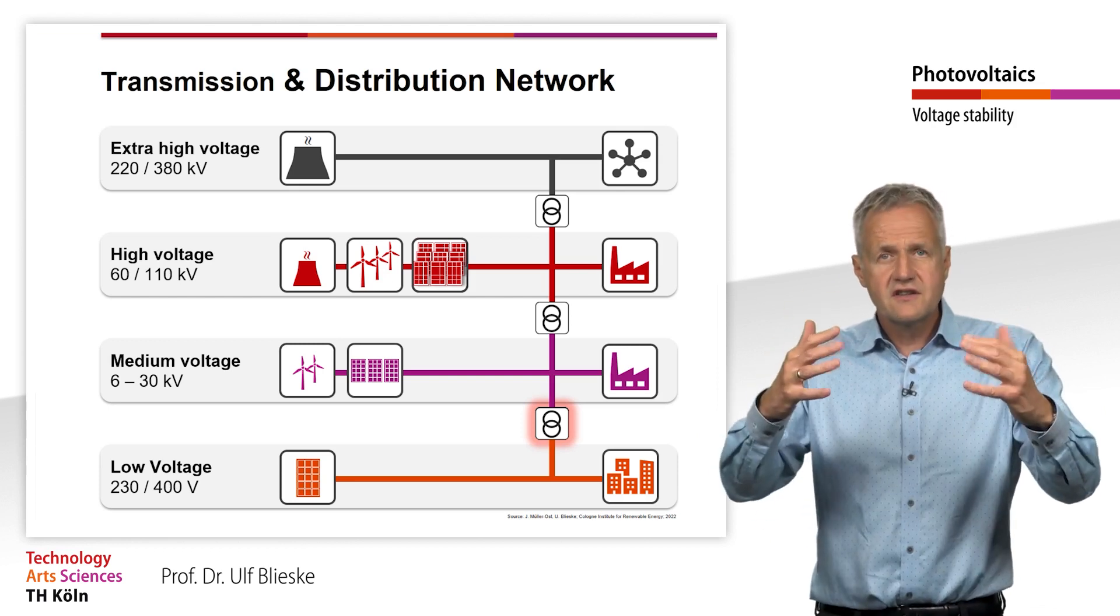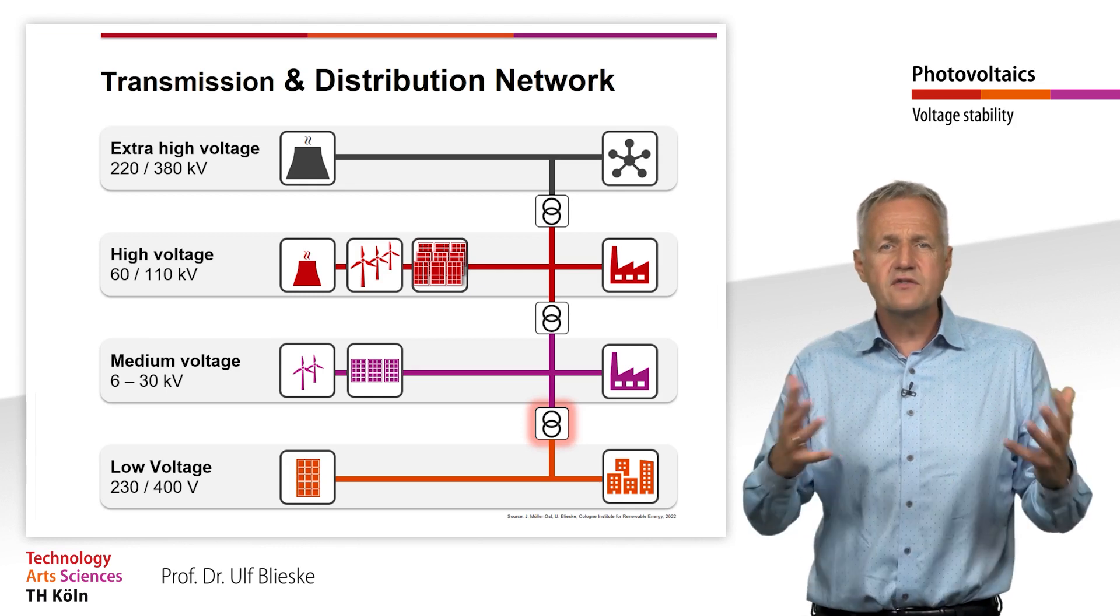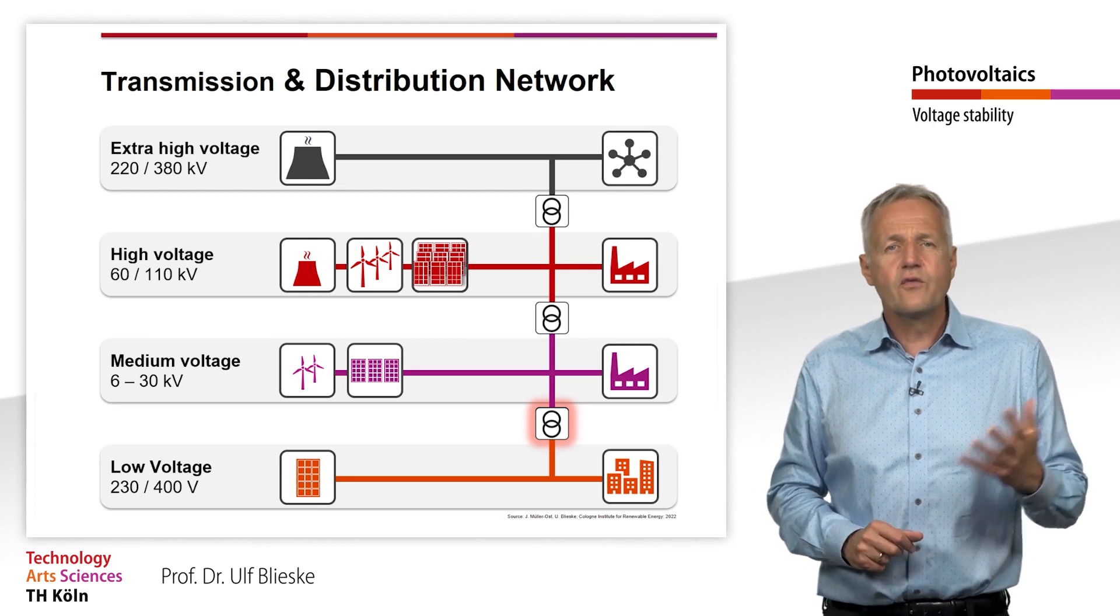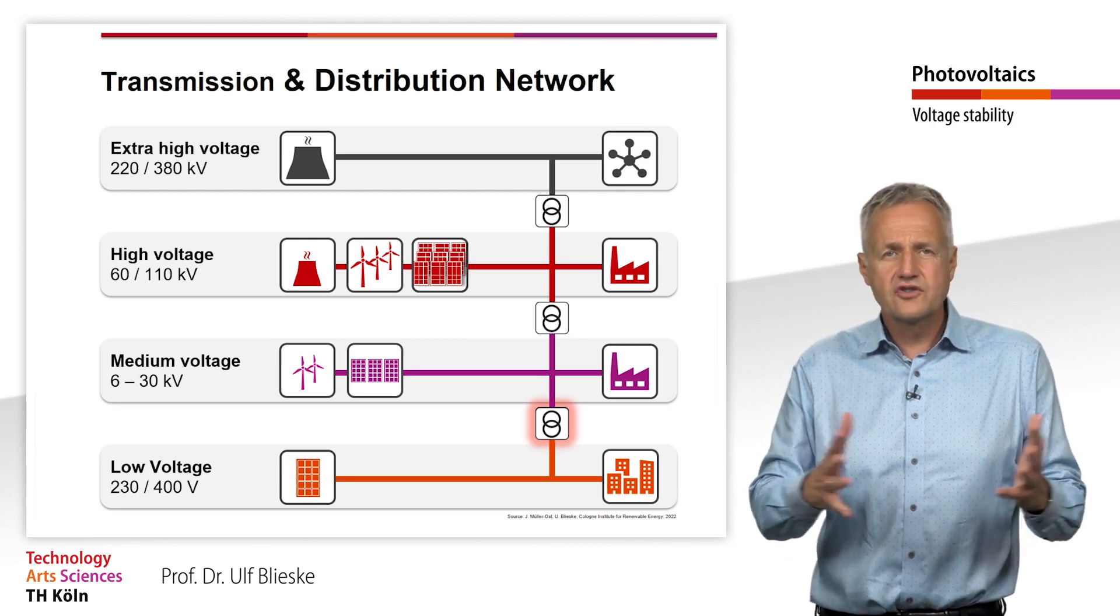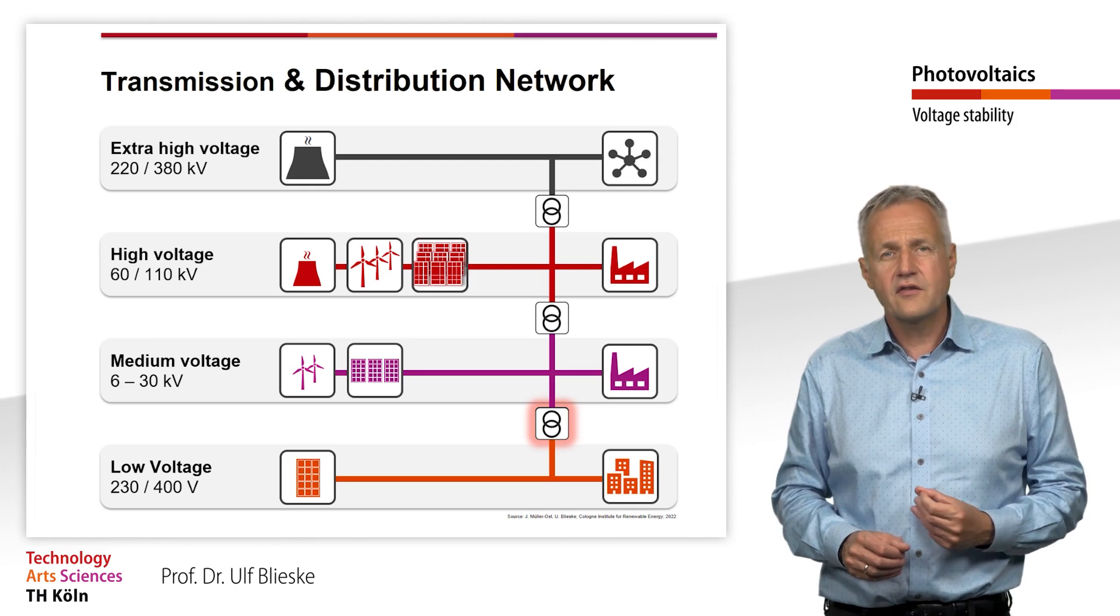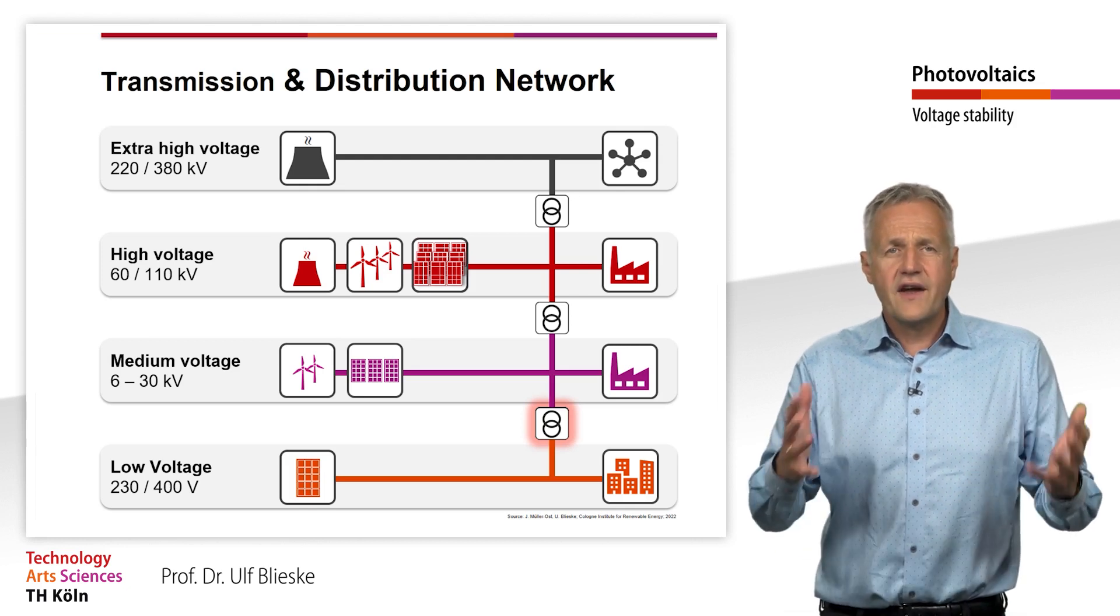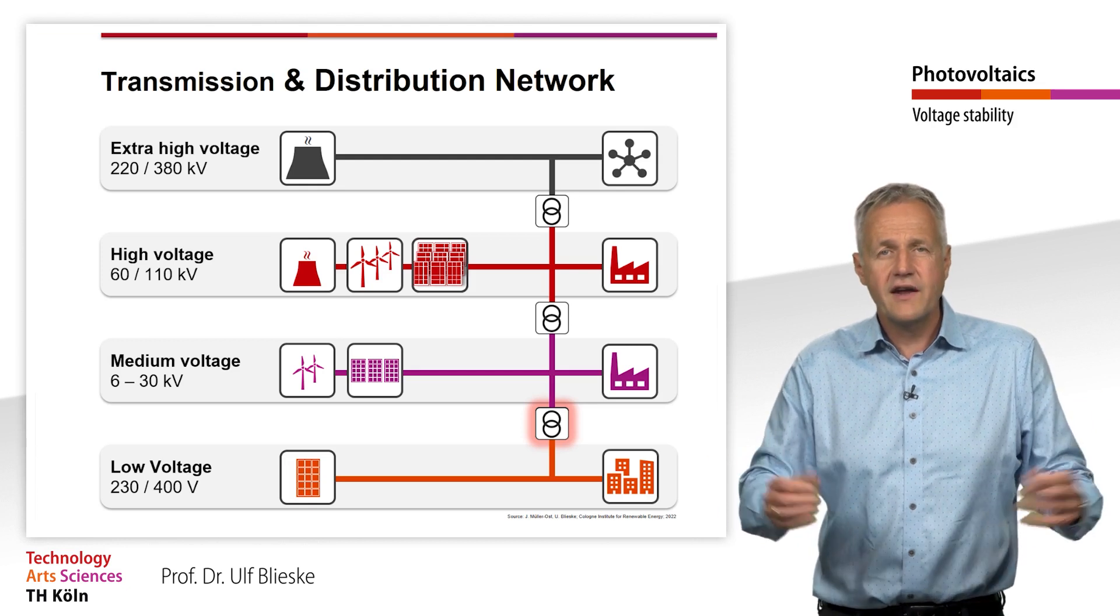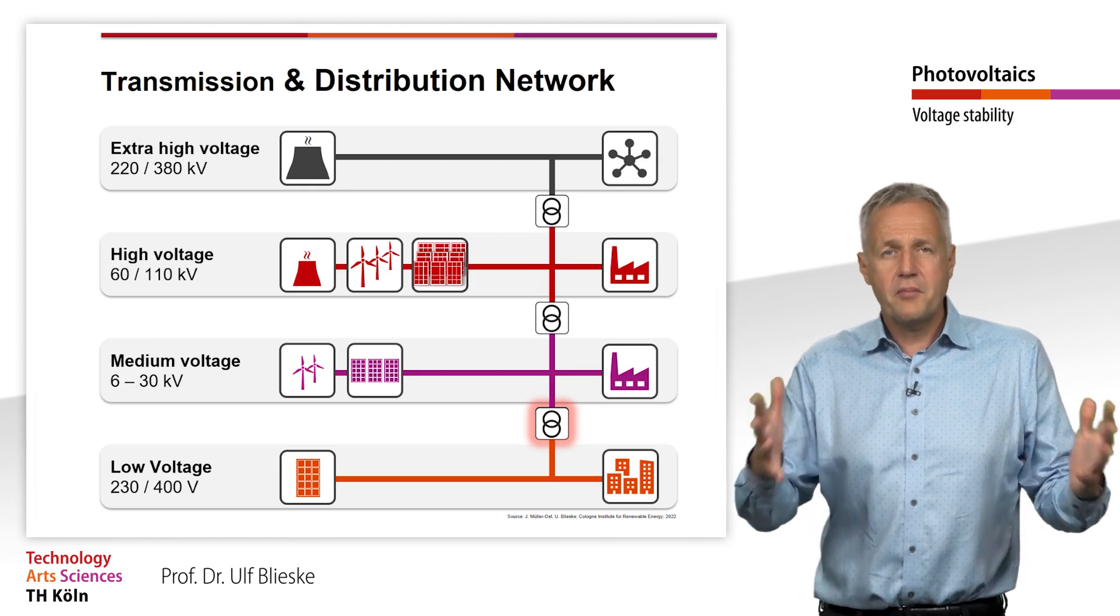Over-voltages stress the insulation and reduce the lifetime of the equipment. Under-voltage, on the other hand, can in the worst case lead to an uncontrollable drop in the main voltage. This effect is called voltage collapse and can lead to a complete or partial failure of the power supply system.